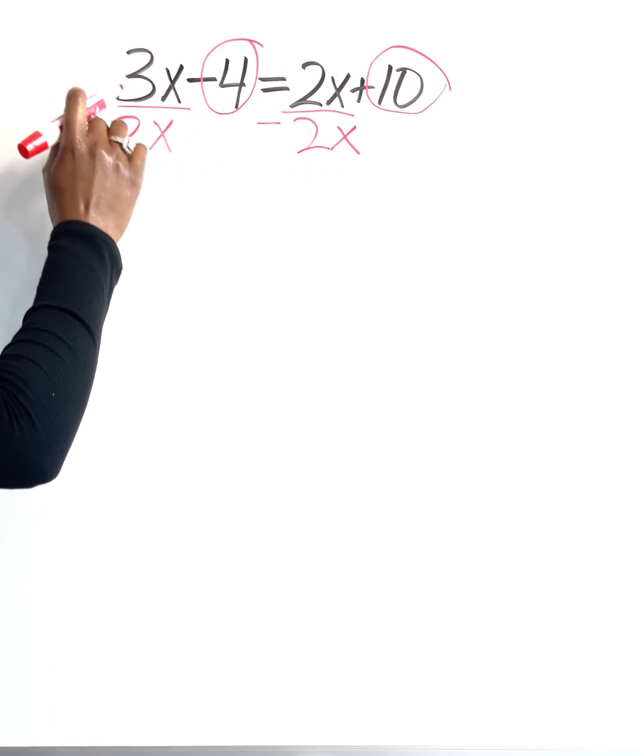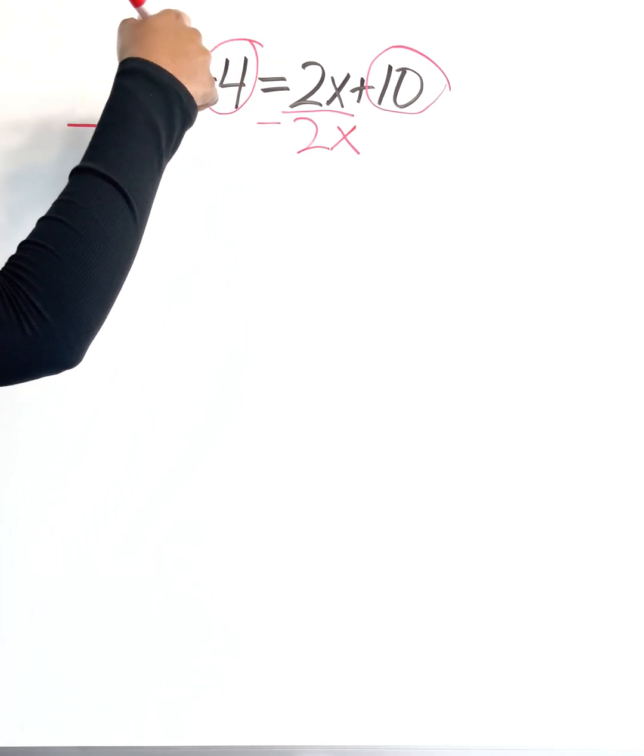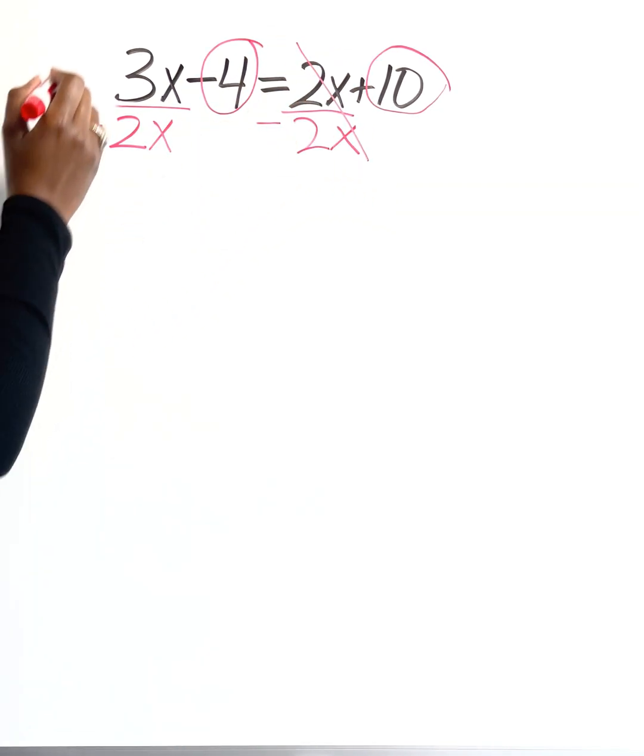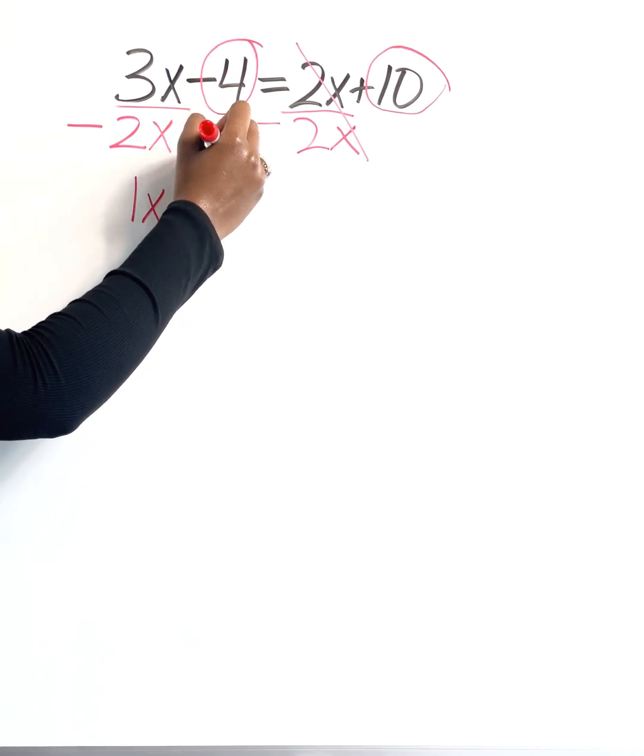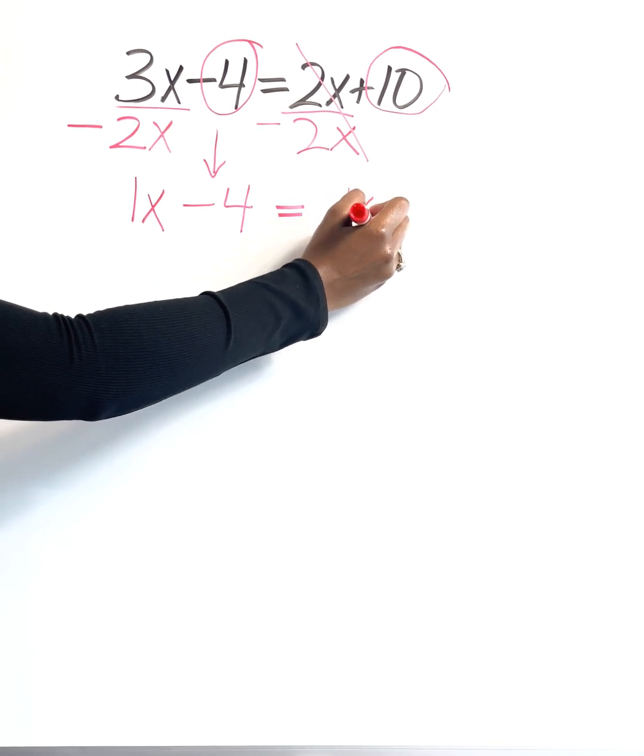And as you can see, I'm subtracting it under the like term. I'm not going to do anything with this 4. So these are going to cancel out. If I do 3x minus 2x, that's going to give me 1x. And then I'm going to bring everything else down. So minus 4 is equal to 10.